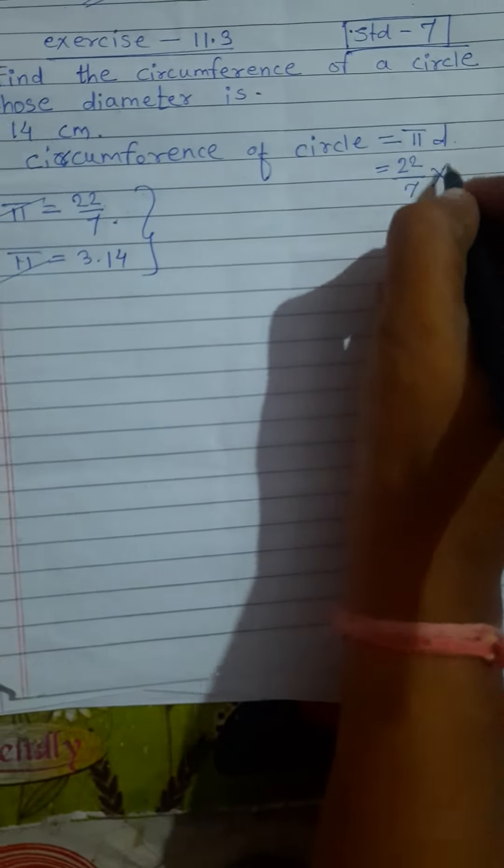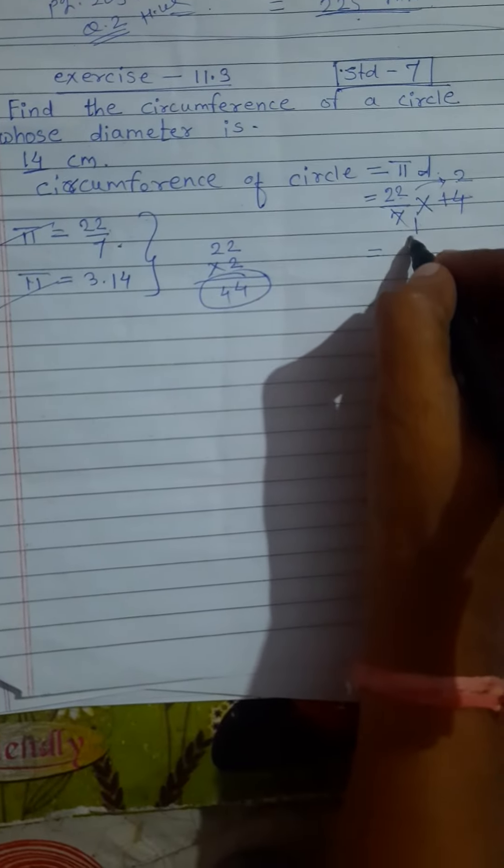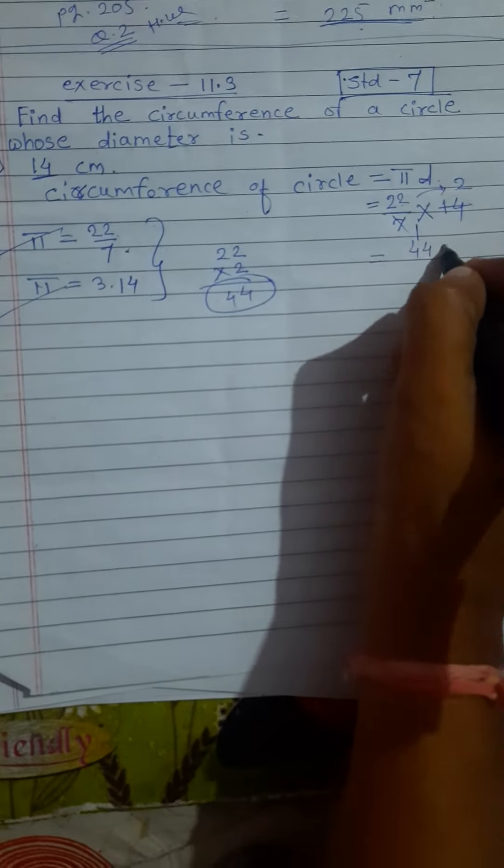Now just solve that equation. 7 into 1 is 7, 7 into 2 is 14, and now multiply 22 by 2. In rough side we also multiply 22 by 2, 2 times 2 is 4, again 2 times 2 is 4, answer is 44. So write down here 44 cm.